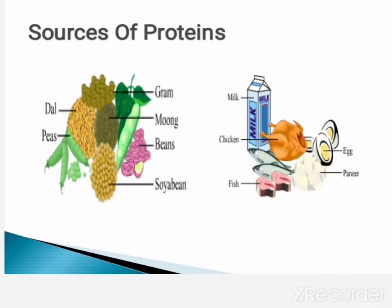Now we see sources of proteins. Gram, peas, soya beans, beans, etc. are some sources of proteins which we obtain from plants. And milk, chicken, fish, egg, and paneer are the sources of proteins which we get from animals. Both are rich in proteins.